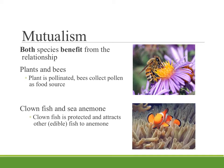In mutualism, both species benefit from the relationship. Plants that use insects to pollinate, such as bees, tend to be in a mutualistic relationship. The plant benefits because it is pollinated — many plants cannot self-pollinate and need pollen from another plant. Bees collect pollen as a protein source, but some pollen gets transferred from one flower to another. So both the plants and the bees benefit from this relationship.